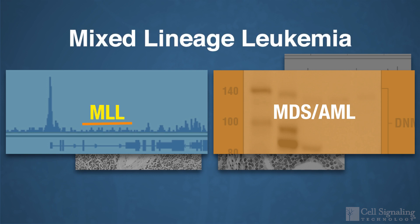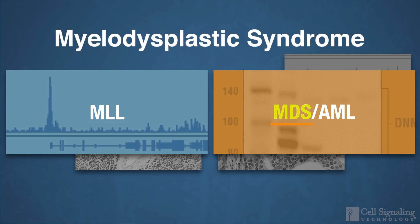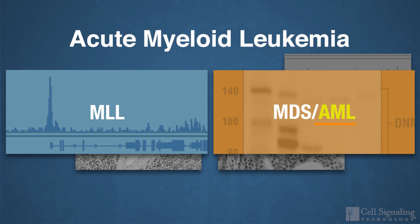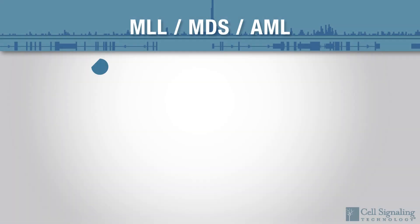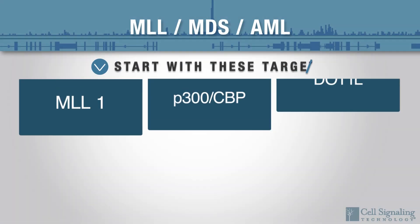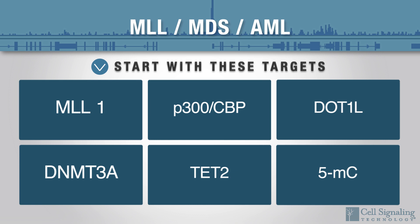Mixed lineage leukemia, myelodysplastic syndrome, and acute myeloid leukemia. Here are several targets involved in epigenetics to consider for your MLL, MDS, or AML research.